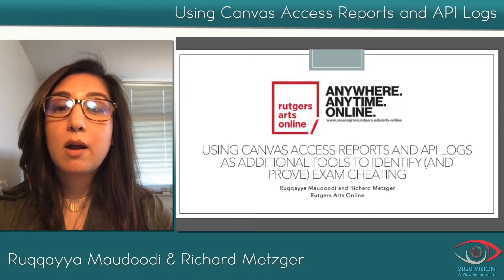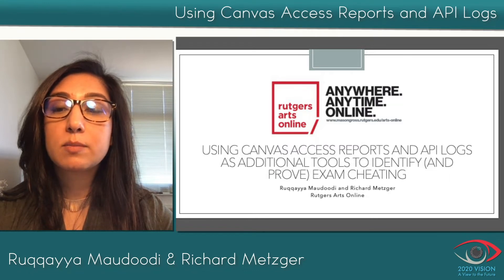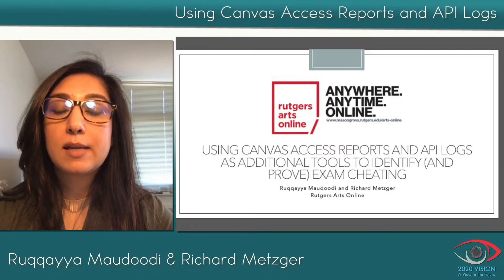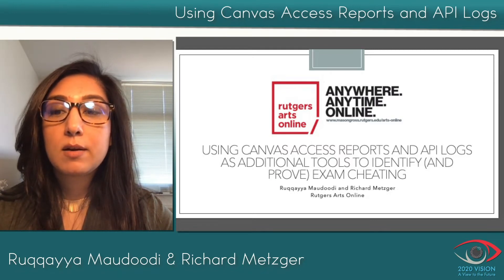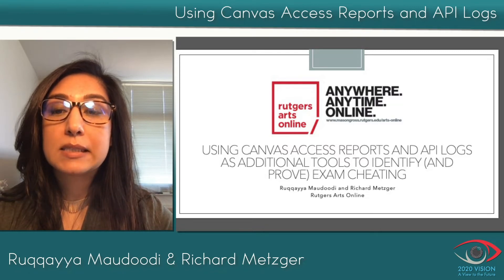We offer fully online courses in all the different visual and performing arts disciplines at Mason Gross, which includes art and design, dance, filmmaking, music, and theater. The online courses are developed for the non-major, and we serve approximately 10,000 students each academic year.